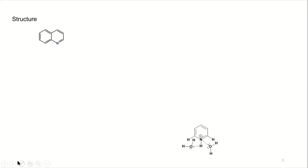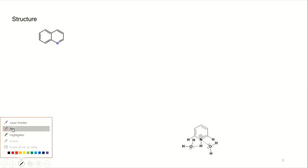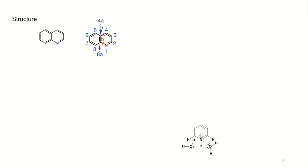When you fuse with pyridine, and while giving the numbering, you have to be careful. Your numbering will start from nearby the junction. So nearby the junction we have four points. You have to start with one point in such a way that the hetero atom will get the least number. So we have nitrogen here.